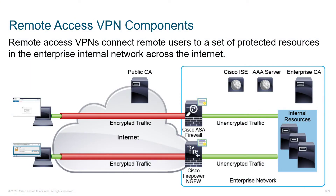Remote access VPN components. Looking at remote access VPNs, we essentially have on the head end either the Cisco ASA firewall or the next generation firewall. Realize that for doing remote access VPNs we can also use IOS routers, but we're focusing on firewalls for this discussion. Either the ASA or Firepower is capable of supporting remote access VPNs. From the client side, we can either use the Cisco AnyConnect client or we can leverage the clientless connection.